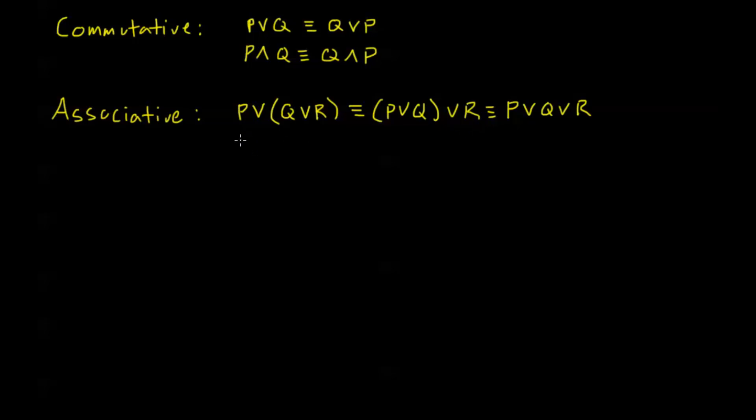Now we also have this with our and as well. P and Q and R, this is equivalent to P and Q and R, which in turn is just equivalent to P and Q and R.